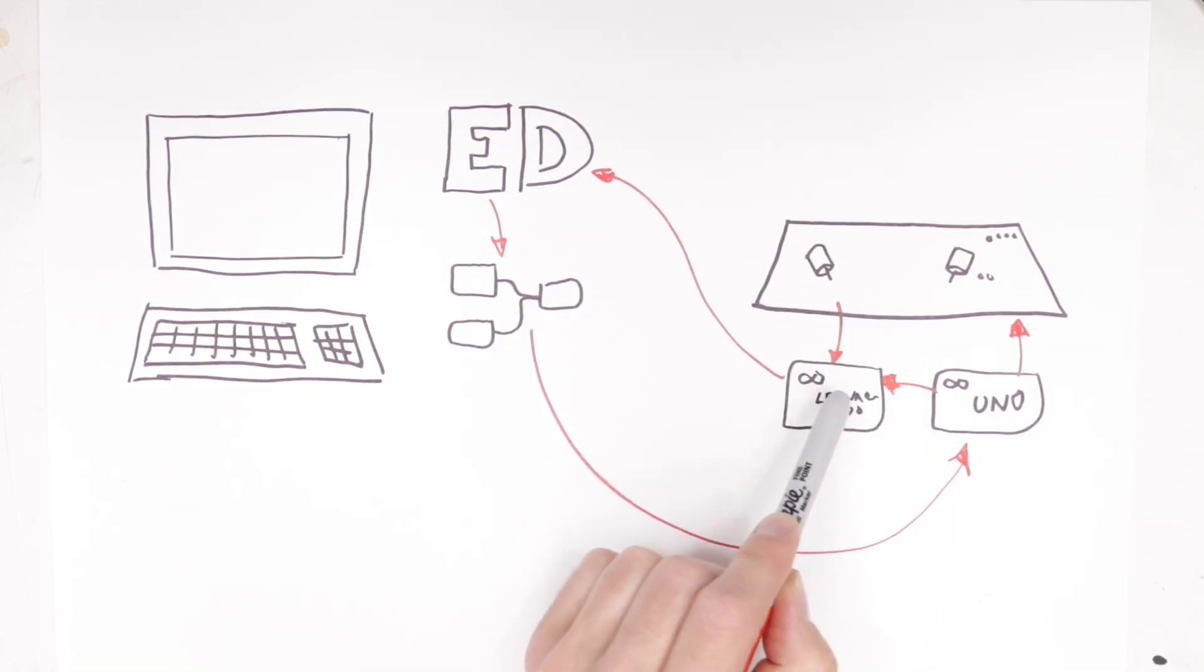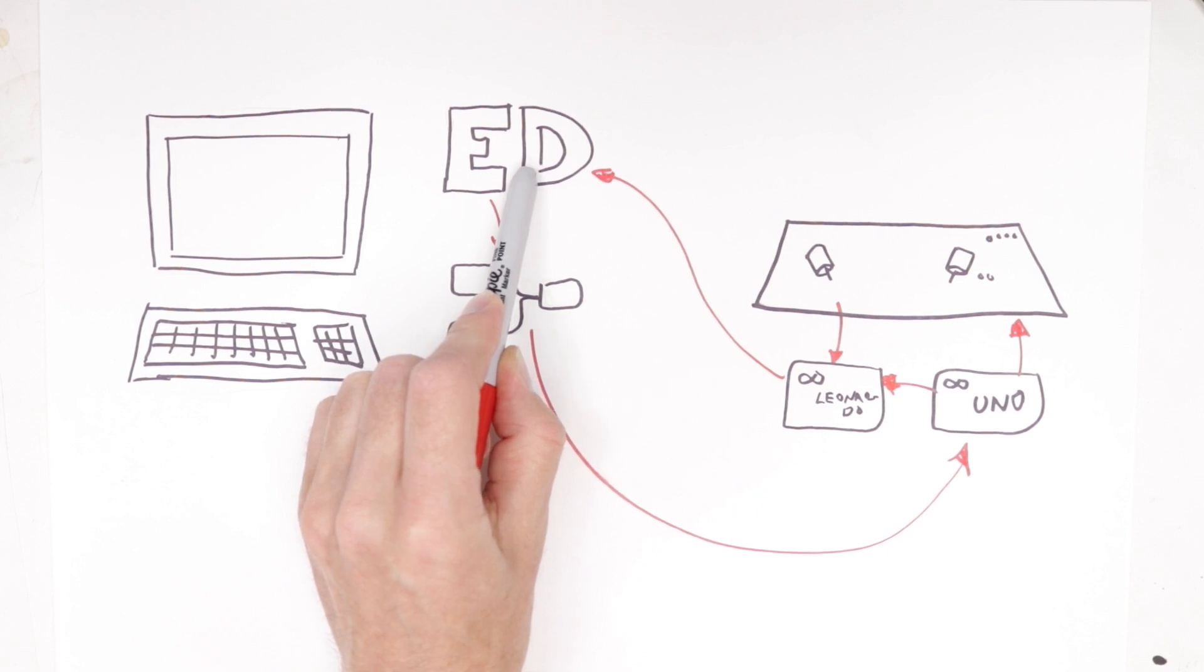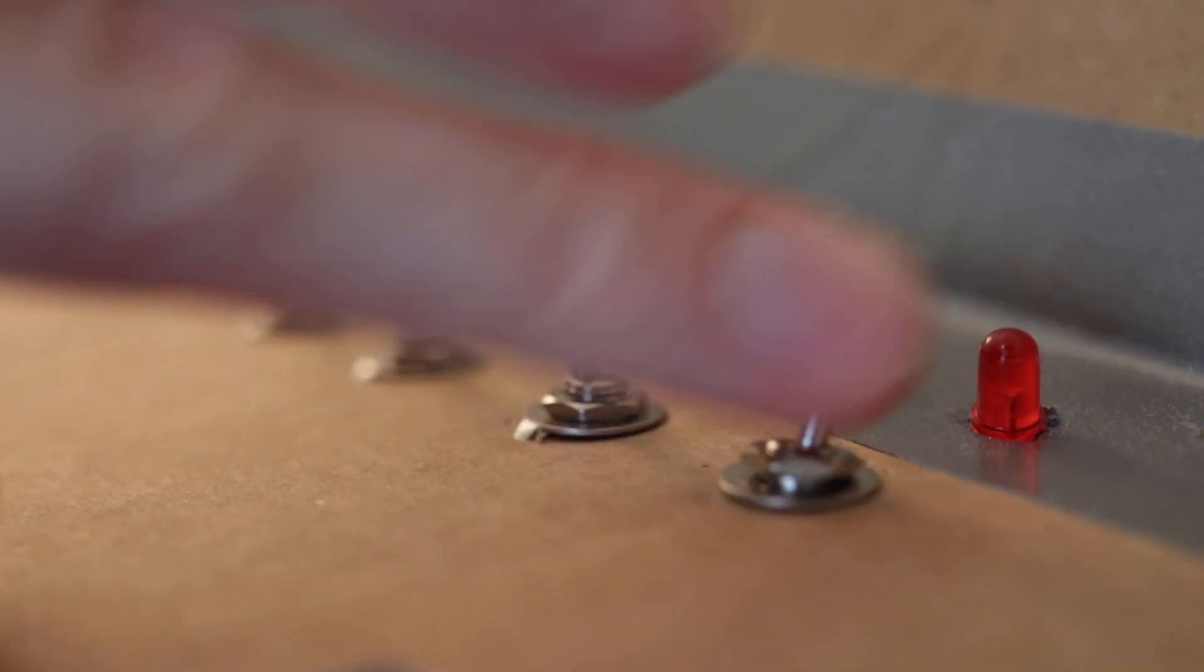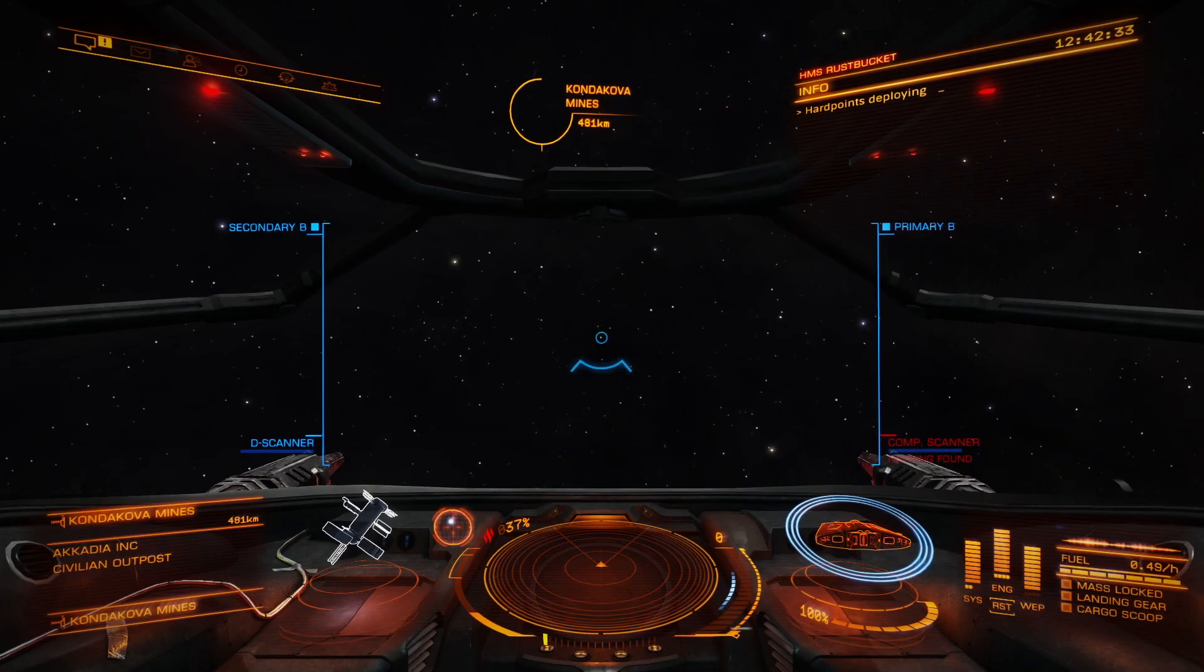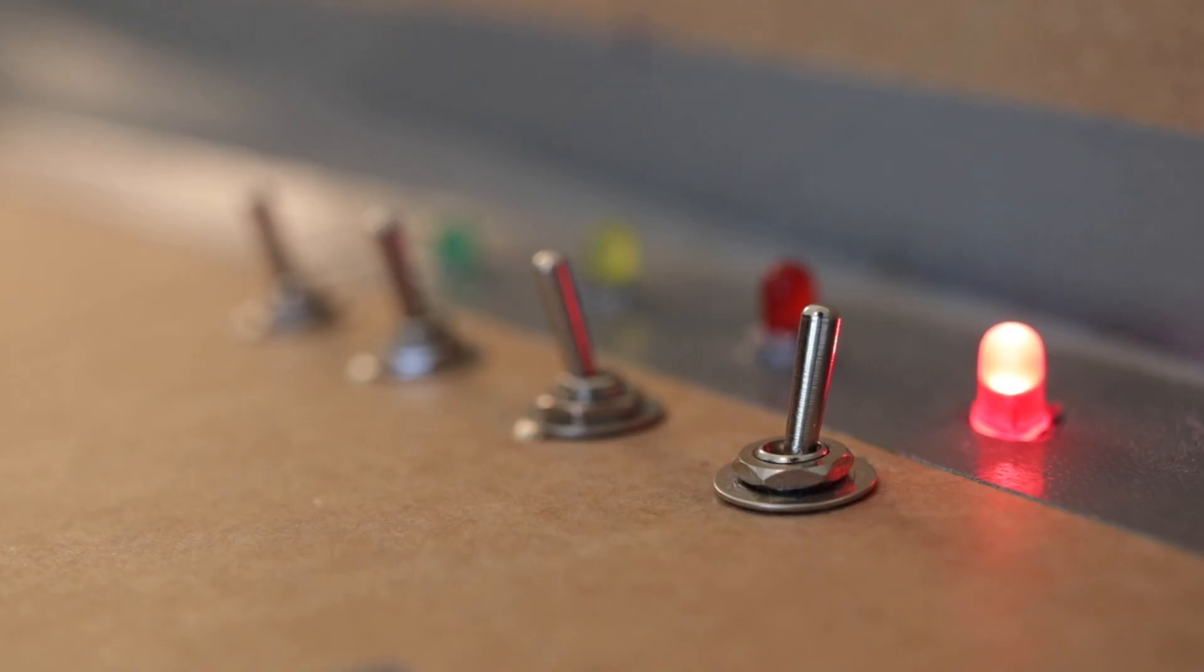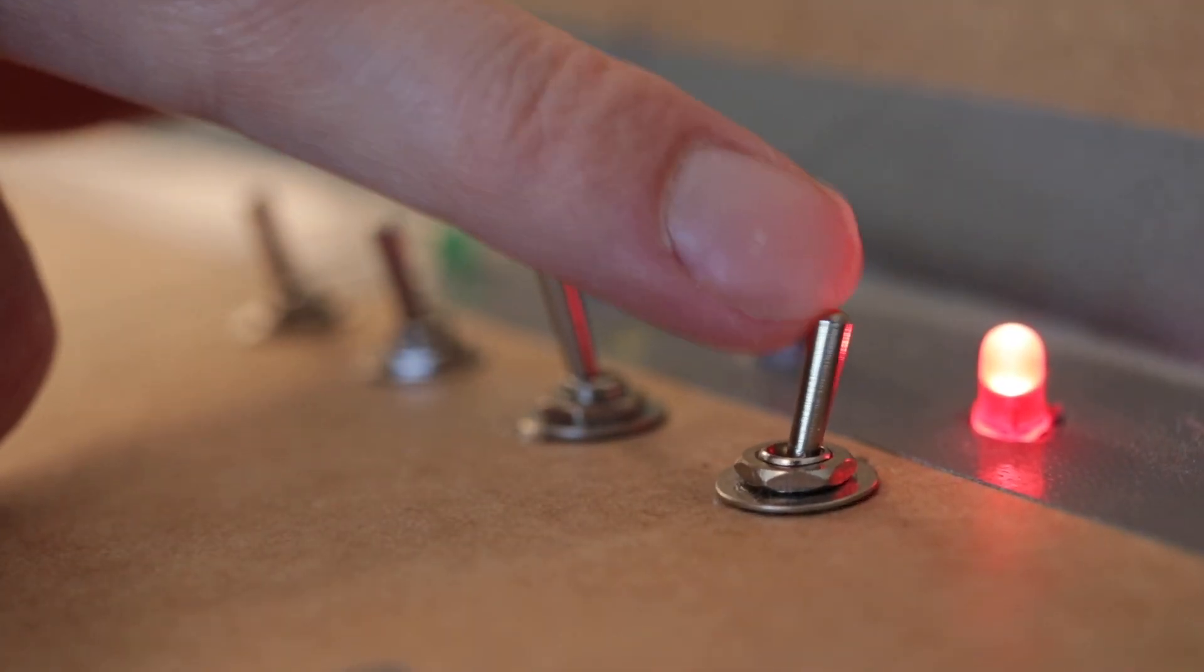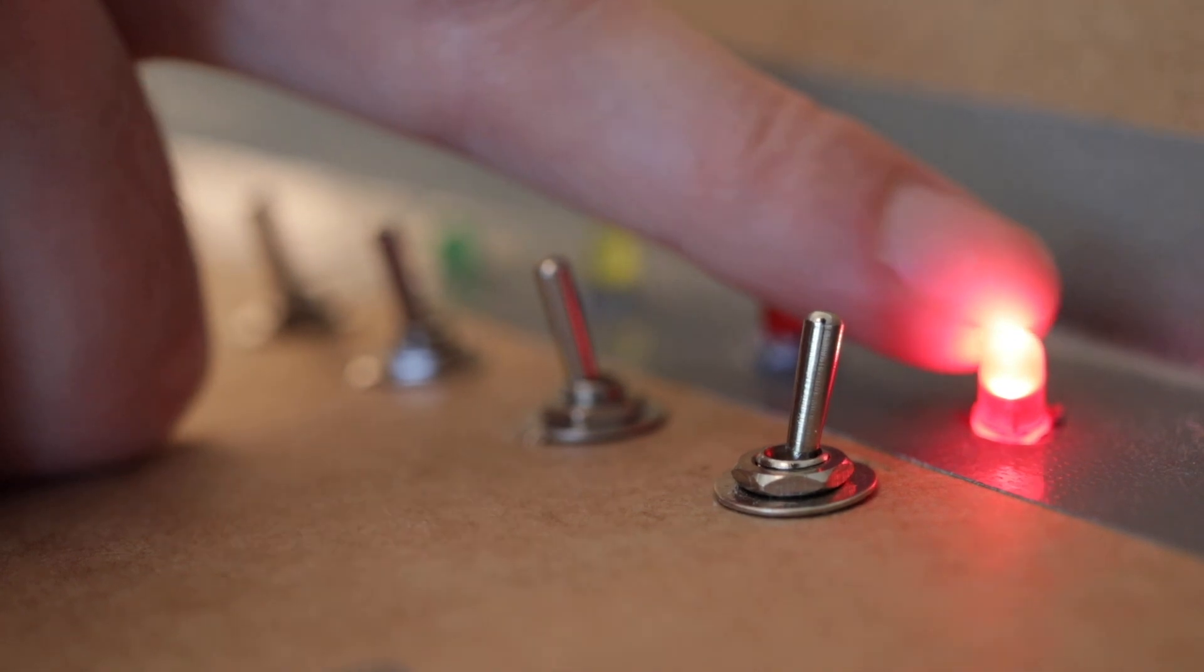Then, this Uno sends a signal to this Leonardo, telling it, press the button for folding in the landing gear, which gets sent to Elite Dangerous. As I switch this button, it sends one button click to the game. The game turns on my hardpoints, and sends a signal back, lighting this one. And now, the Arduino knows this one is in this position, and this is the state of the game.